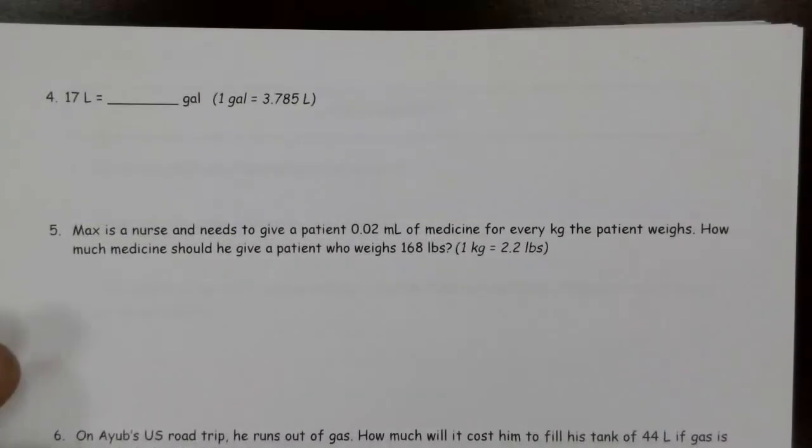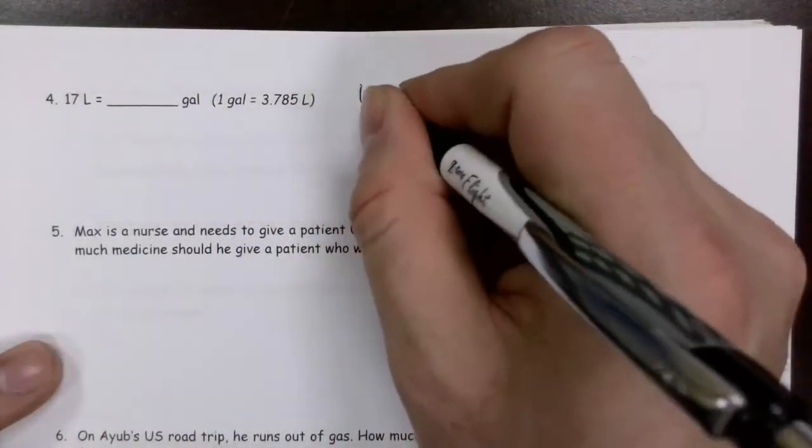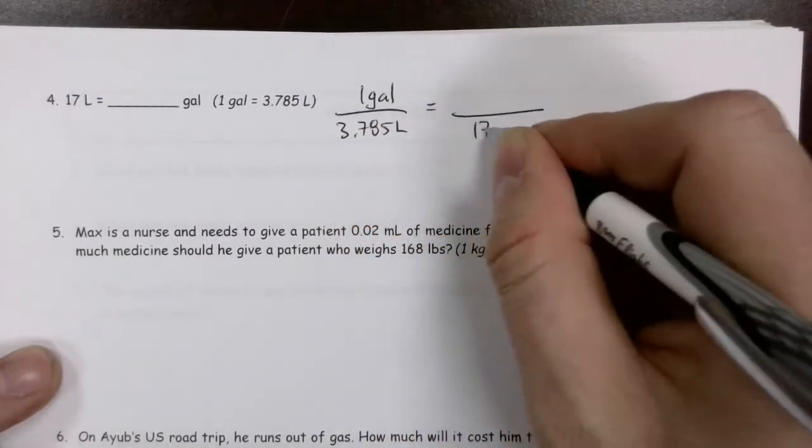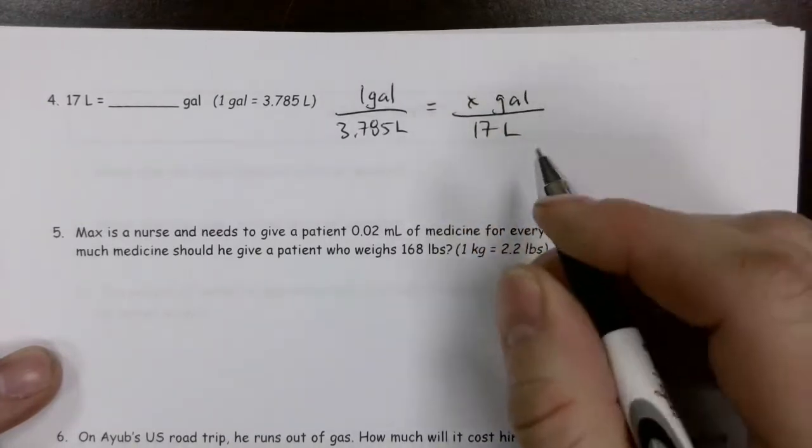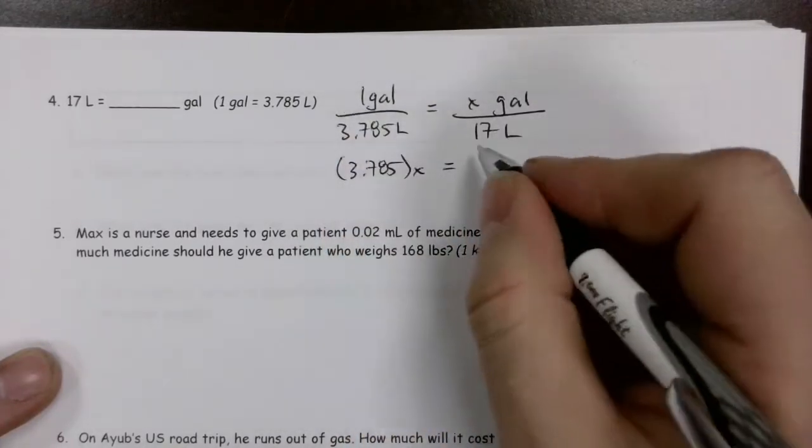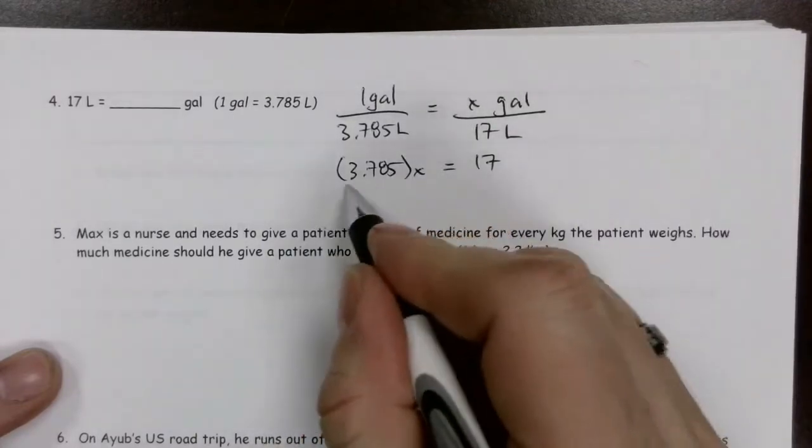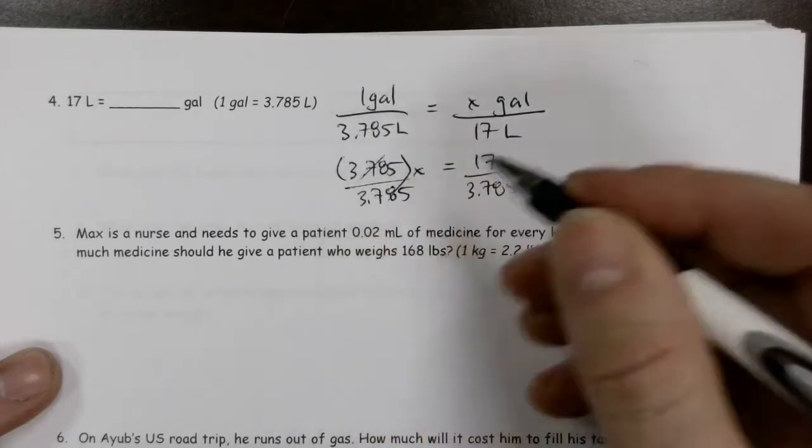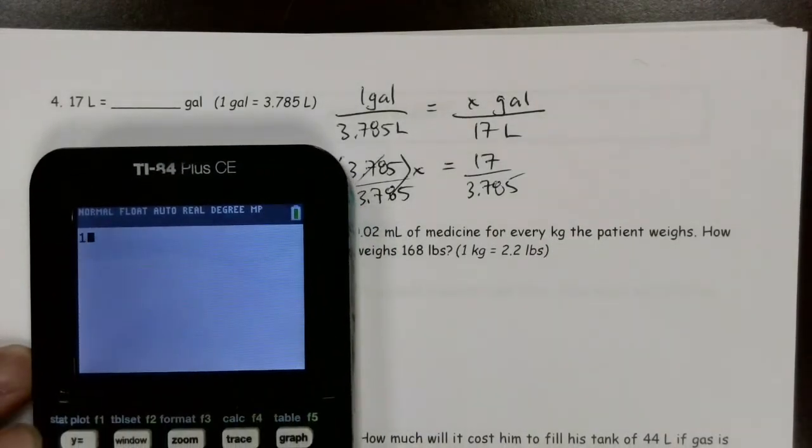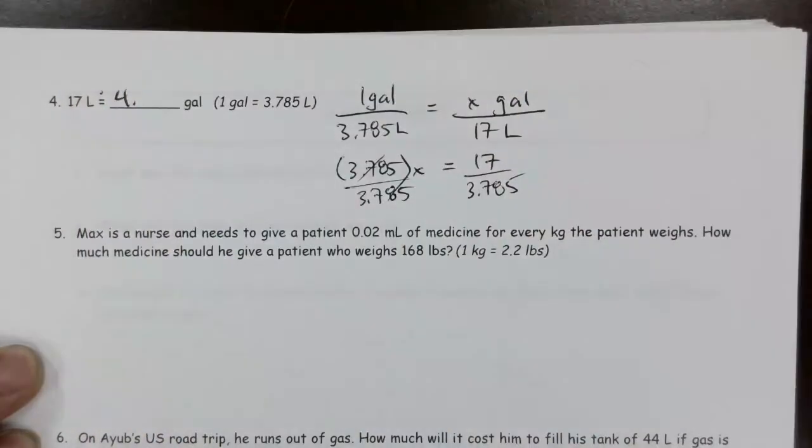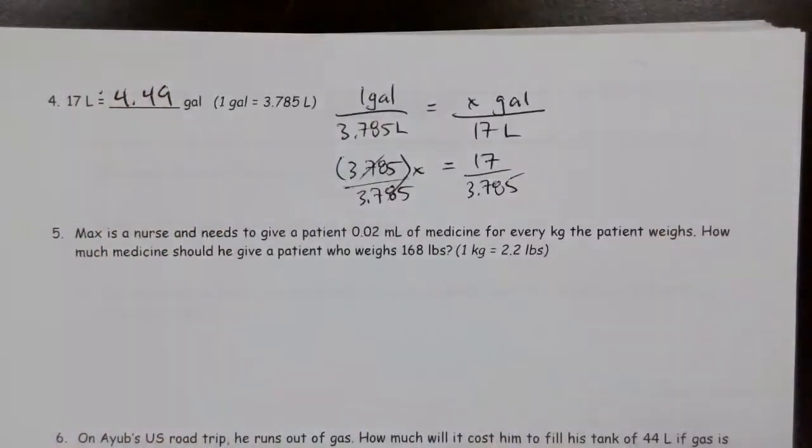17 liters into gallons. We know that one gallon is equal to 3.785 liters. We're working with 17 liters. The question is, how many gallons do we have? So this becomes 3.785 times x equals 17 times 1, or just 17. I'm going to divide both sides by 3.785, so those cancel. Then 17 divided by 3.785, and we get 4.49 gallons. This time, it is okay to use that approximate because I did have to round.